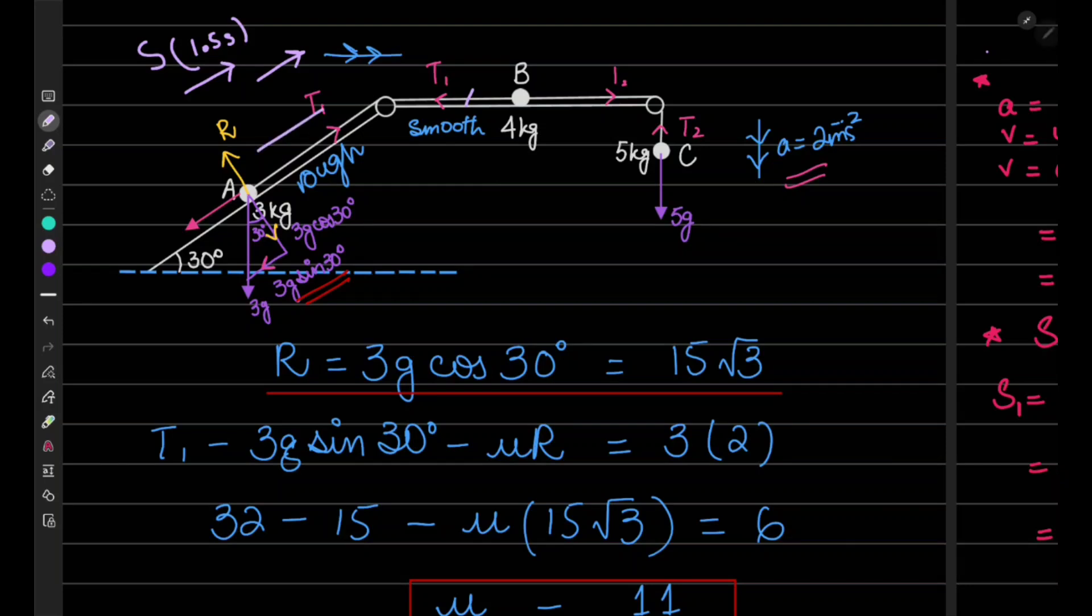They are telling you to find the distance it has covered until it comes to instantaneous rest. Obviously when it is moving upward, it will continue its motion and then for a second it will be at rest, and then it will come back. So they are just asking for the distance it has covered up the plane till the moment it has come to instantaneous rest.